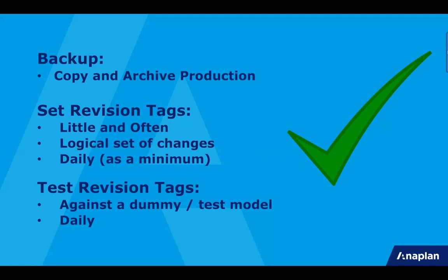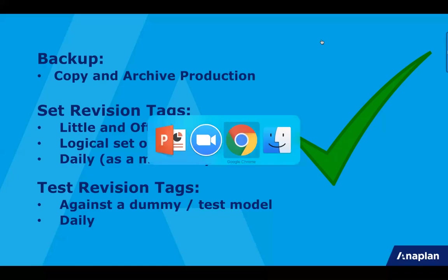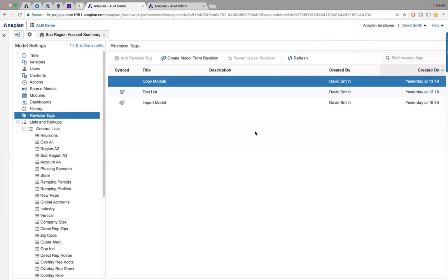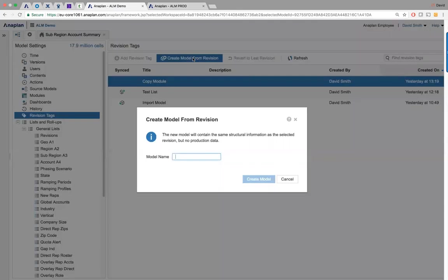In terms of setting up that test model, just in case you are not aware, you can run that through the revisions tag option on the settings tab. And there's an option now, create model from revision. So you can choose one of the revision tags you've done, create a new test model, and it will create a very small cut down version of the model with no production data or no production list. It doesn't matter from the purpose of testing that, whether you have those in or not, because structurally, everything will be the same. So you can check your revisions against those.